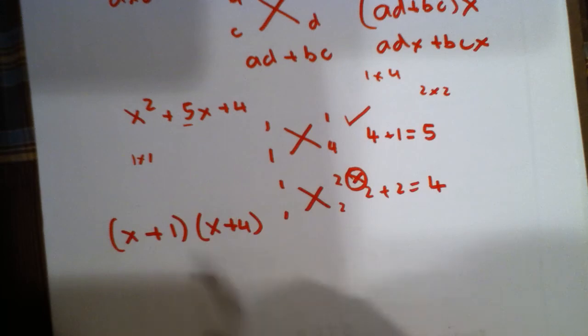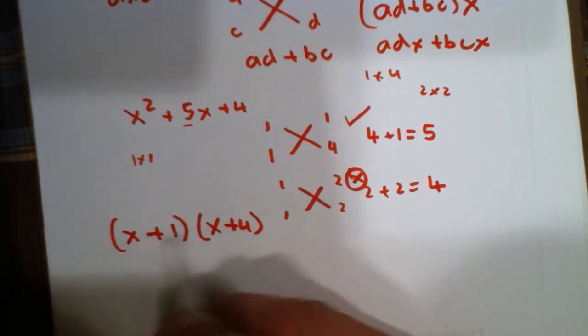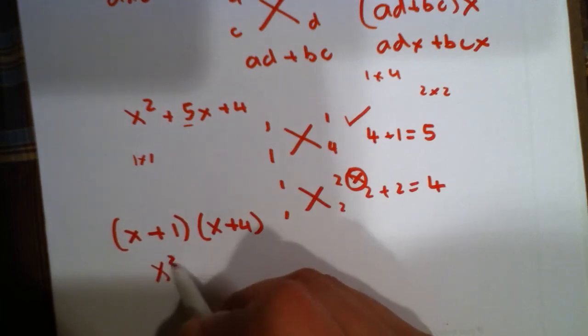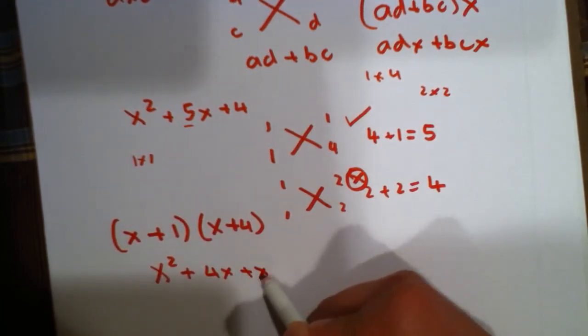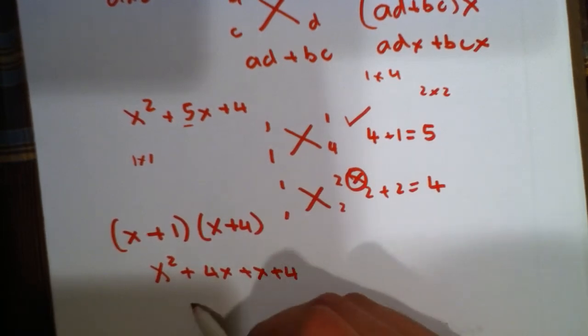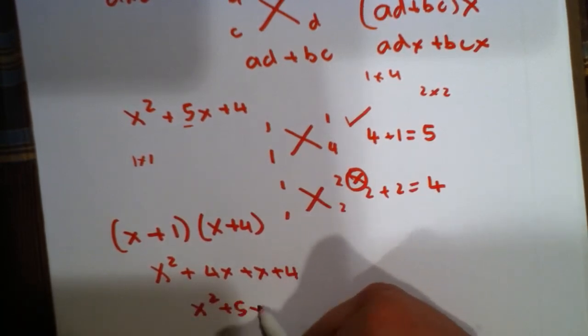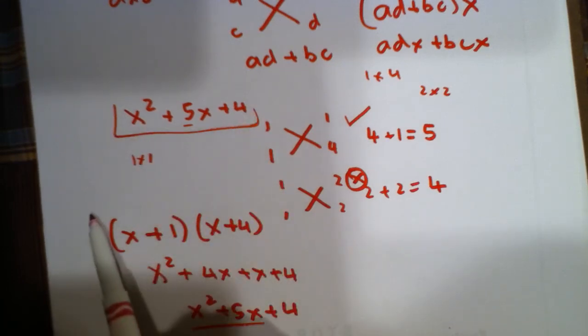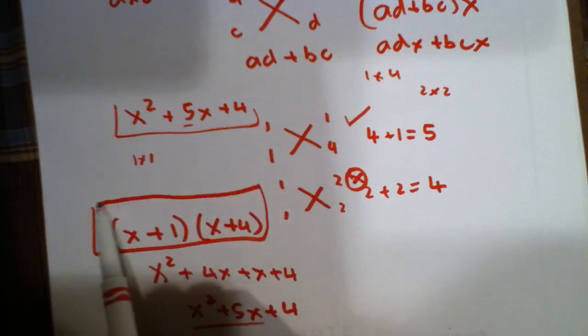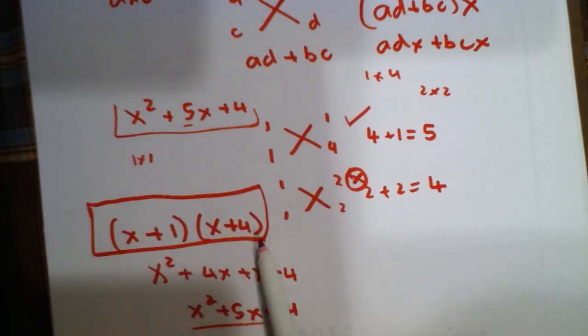And this will, if we use the FOIL method and multiply each term by the other, you do x squared plus 4x plus x plus 4, which is x squared plus 5x plus 4, which is indeed what we had started with. So, this is the check, and this will be the fully simplified and factored form of this.